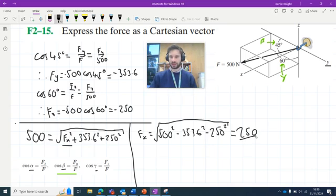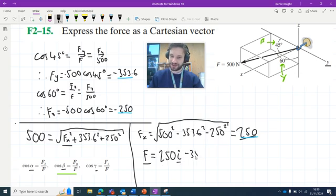We have our x component acting in the positive direction, so it's positive. Now we have all three components. Using ijk notation, vector F equals 250i minus 353.6j minus 250k. That's our solution. If you have any questions about this problem, please leave them in the comments below. Thank you for watching.